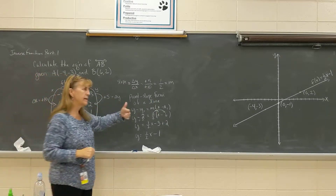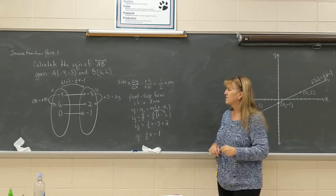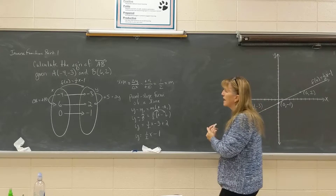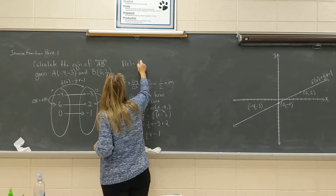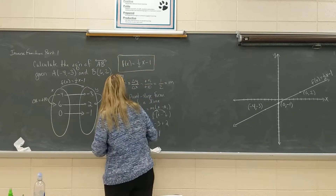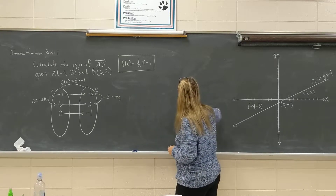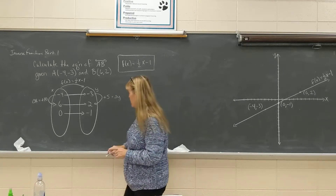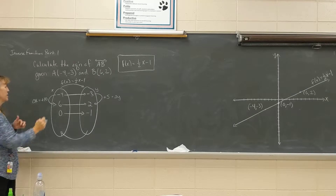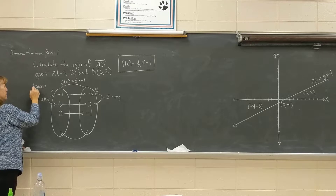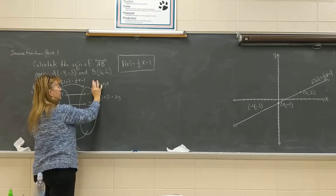The equation of the line connecting A and B is f of x equals 1/2 x minus 1. Now I'm going to see if and how we can create an equation that would bring all the numbers in the range of my function f back into the domain of my function f. This is the domain of f of x, and this is the range of f of x.